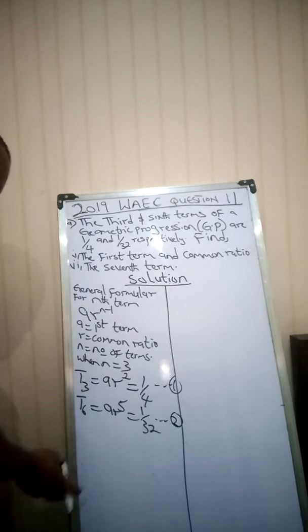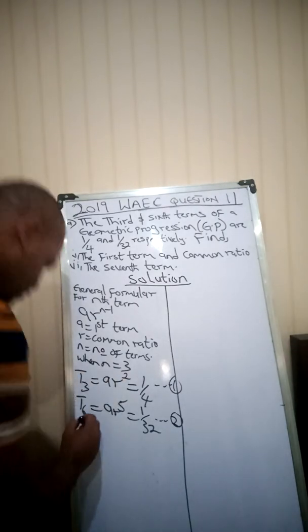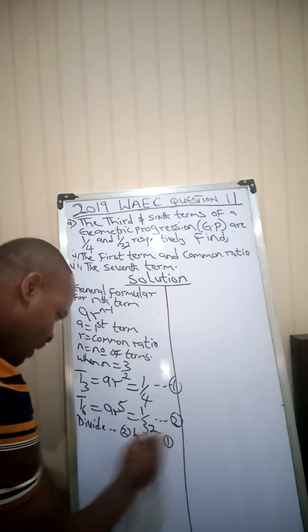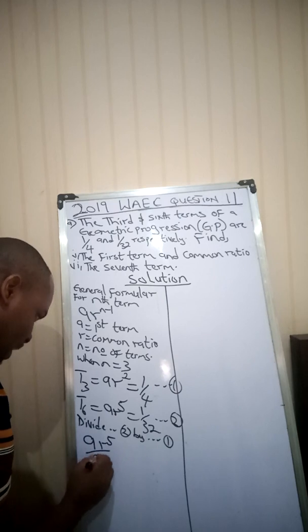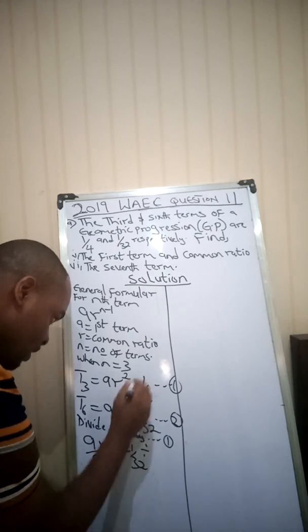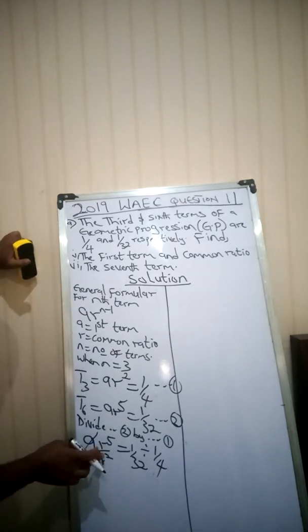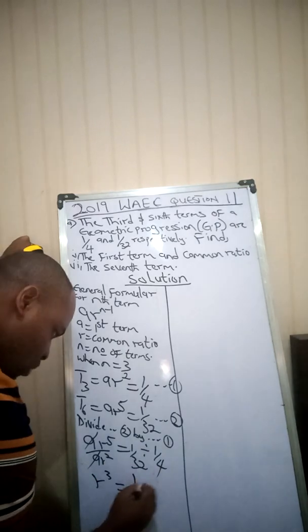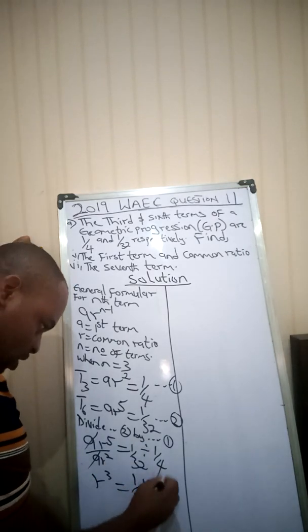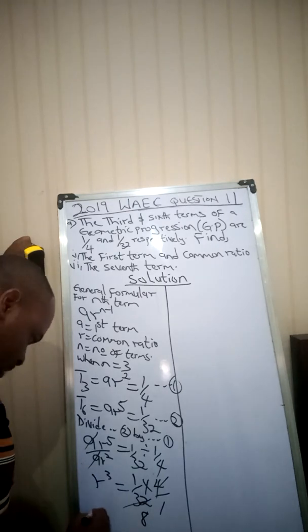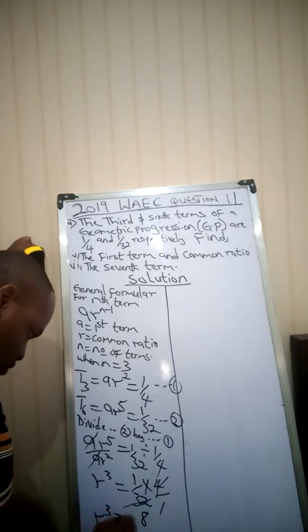Now divide equation 2 by equation 1: ar⁵ over ar² equals 1/32 divided by 1/4. The a's cancel, and r⁵ divided by r² gives r³. Changing division to multiplication: 1/32 × 4/1. Since 4 into 32 is 8, we get r³ = 1/8.